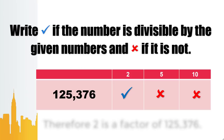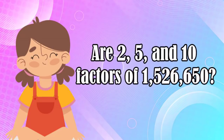Problem 2: Are 2, 5, and 10 factors of 1,526,650? Again, if 1,526,650 is divisible by 2, 5, or 10, then these numbers are factors of 1,526,650.